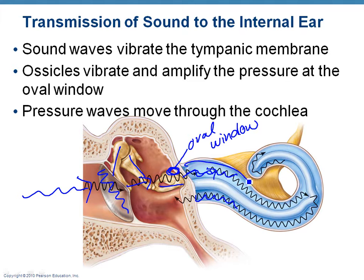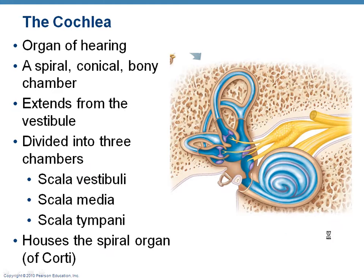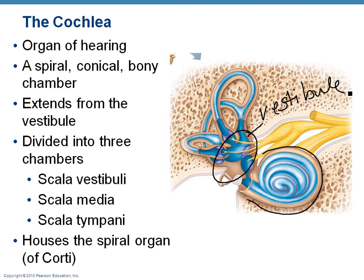Pressure waves move through the cochlea, which is a snail-shaped, spiral, conical, bony structure extending from the vestibule divided into three chambers. These chambers are filled with perilymph and endolymph. The vibrating fluid interacts with the spiral organ inside the cochlea, which, in conjunction with the vibrating fluids, produces a signal that travels to the brain indicating that we're hearing something.